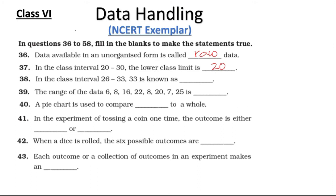Question 39: The range of the data 6, 8, 16, 22, 8, 20, 7, and 25. We know that range is highest minus the lowest. Here the highest is 25 and the lowest is 6, so the difference is 19. Question 40: A pie chart is used to compare a part to a whole.